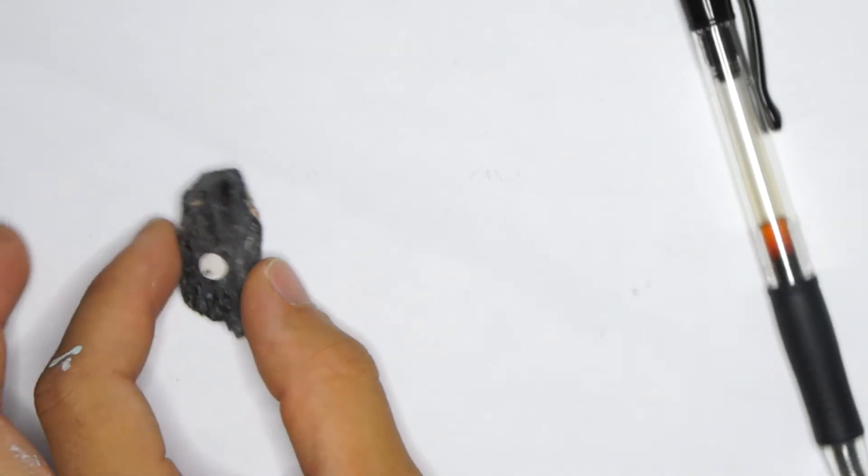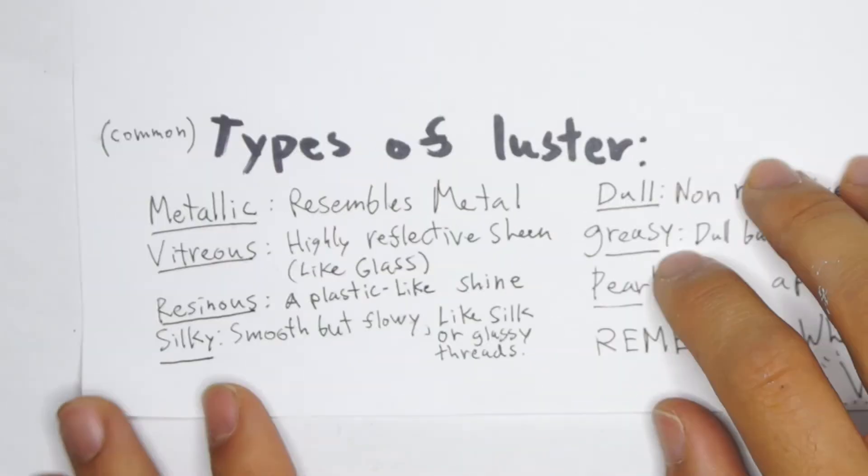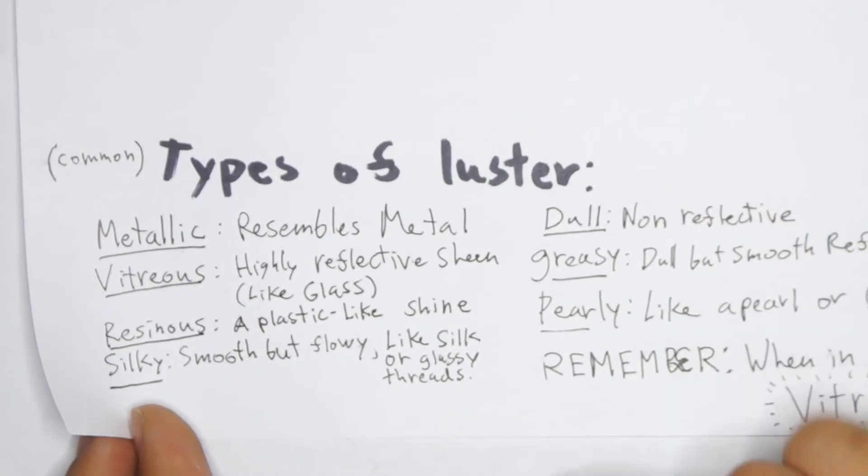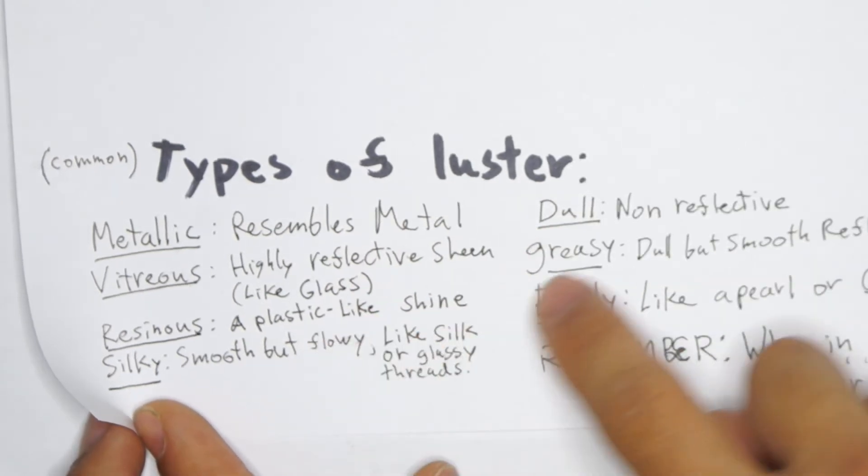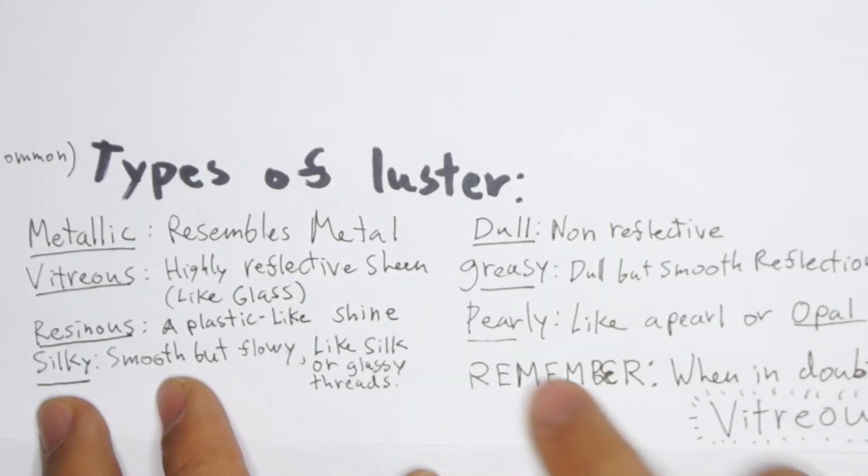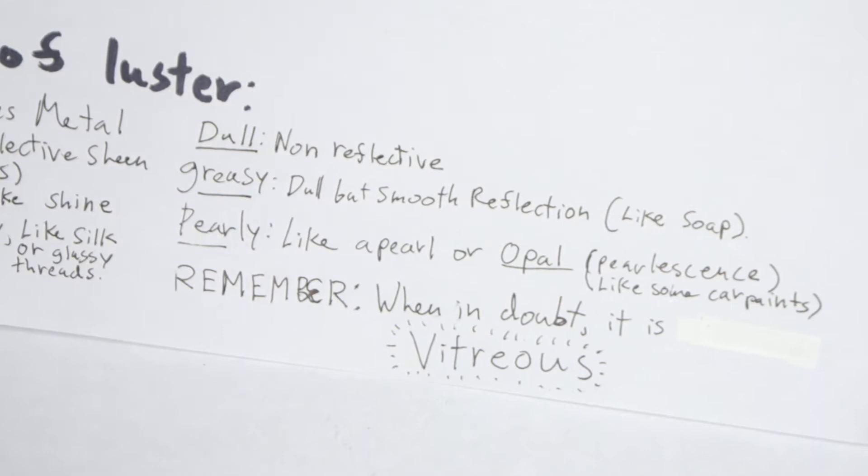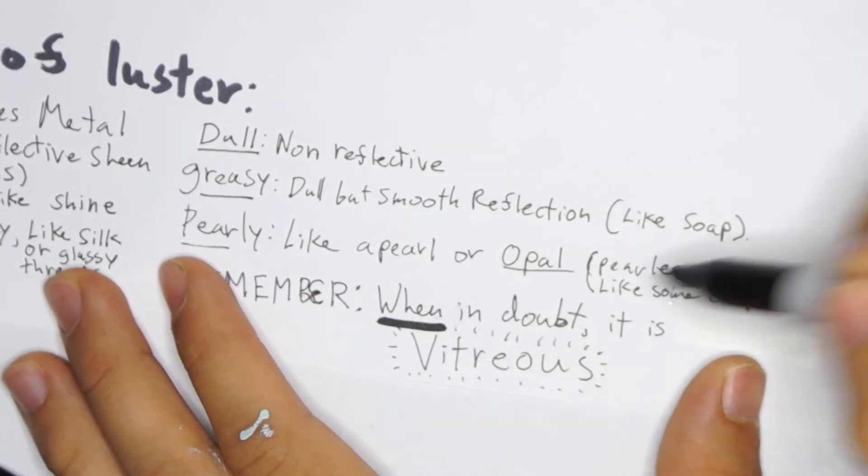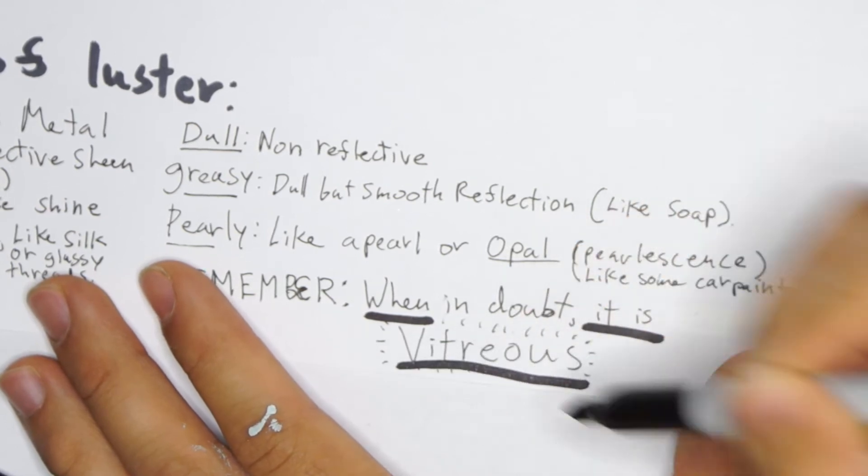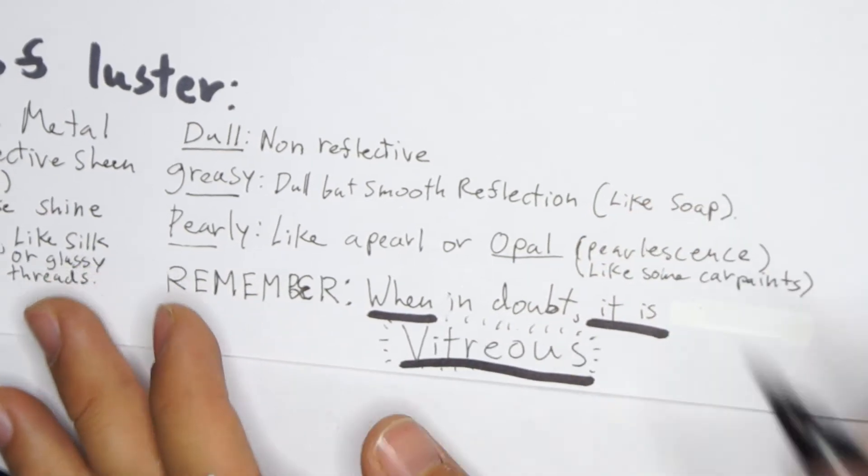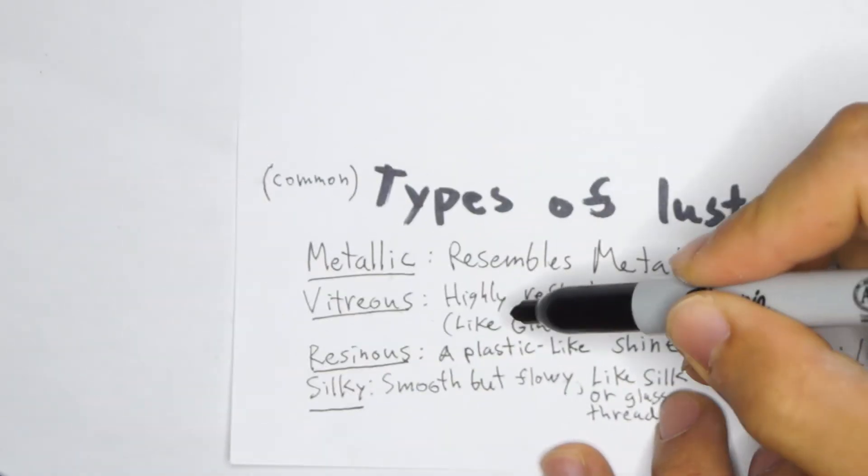Now that we've gone over hardness and cleavage planes, we're going to go over the confusing one I mentioned, called luster. I also wrote up a guide to luster for you. This will also be in that Canvas announcement and that cheat sheet I made you. The big thing you really need to remember that I'm going to highlight here is when in doubt it is vitreous.